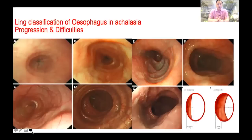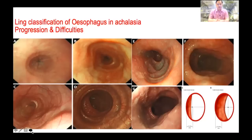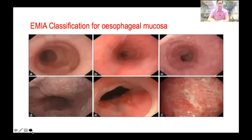Then we have to evaluate the esophagus for shape and tortuosity. In A, absolutely straight esophagus; in B, multiple circular rings; in C, semi-circular rings; in D, semi-circular rings extending beyond the midpoint of the esophagus. In E, you can see multiple diverticular outpouchings.